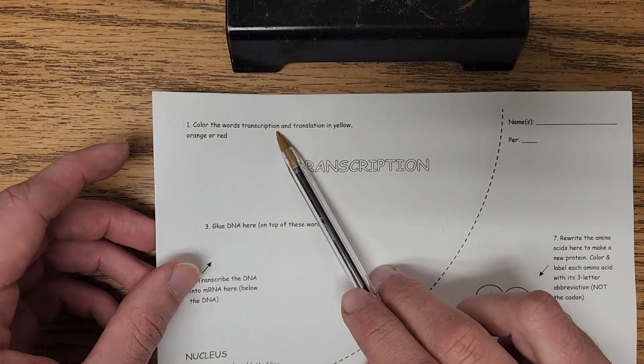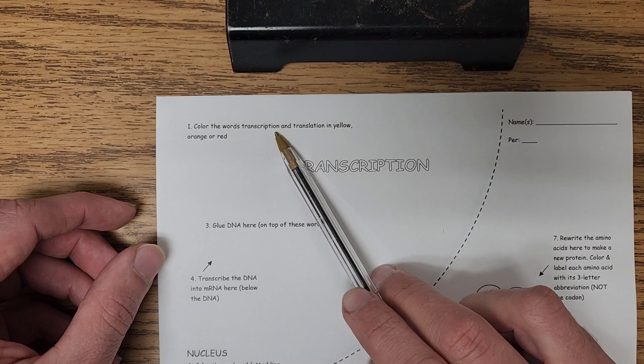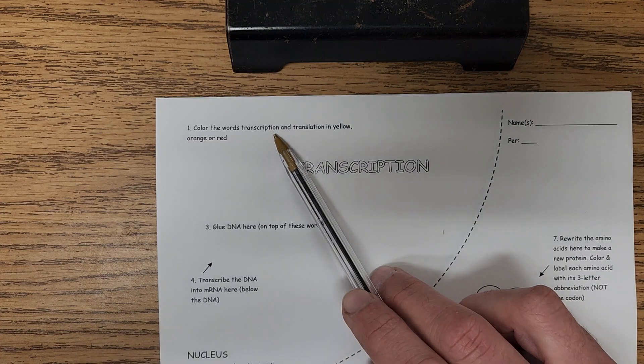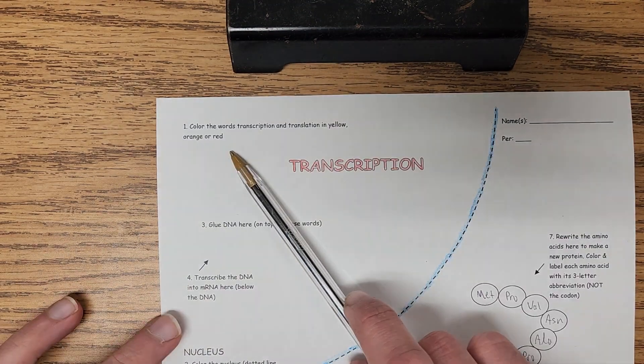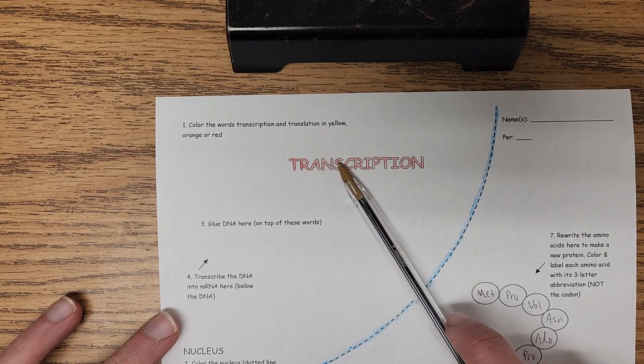Starting with number one, color the words transcription and translation in yellow, orange or red, doesn't matter which one. Here's how we did it in this particular example, but again, any of those colors is fine.